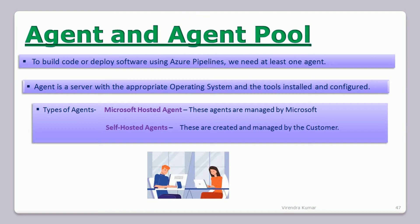Now we will see the types of agents. Mainly in Azure DevOps there are two types of agents available. The first type is called the Microsoft-hosted agent. Microsoft-hosted agents are managed by Microsoft — these agents are in the cloud and are virtual machines. If you know the concept of virtualization and the cloud, then you can easily understand the Microsoft-hosted agent concept.